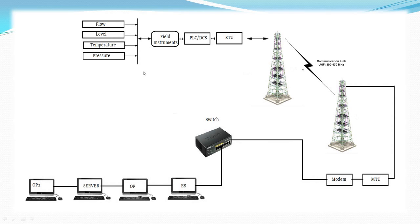You have flow, level, temperature, and pressure field instruments to monitor things. PLC and DCS gather information and control the process. RTUs are also present — there are two types: Intelligent and Non-Intelligent, as discussed in the last session. An RTU is a local collection point where all the information and tags are gathered.